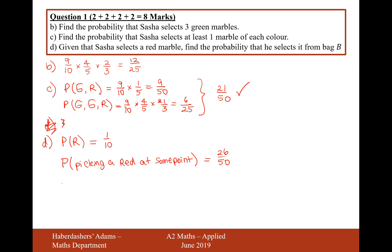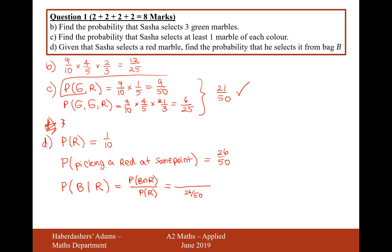Now we need to find the probability of picking it precisely from bag B given that he selects a red marble, so we're going to use Bayes' theorem — the conditional probability formula. The formula is the probability of B and R over the probability of R. The probability of R is 26 out of 50. The probability of picking the red marble in bag B is nine out of 50, going green in bag A then red in bag B. We cancel out the 50s and get an answer of nine out of 26. So nine out of 26 is our answer for part D.